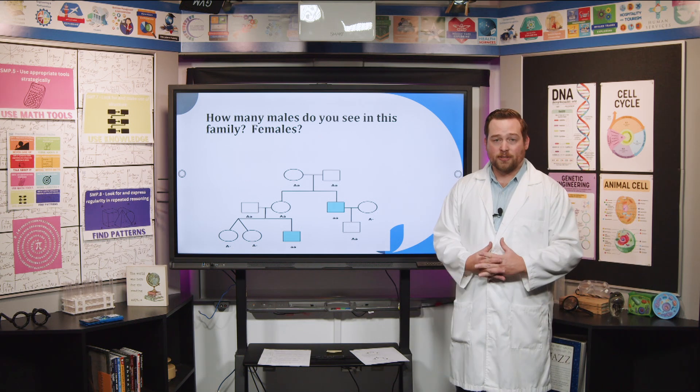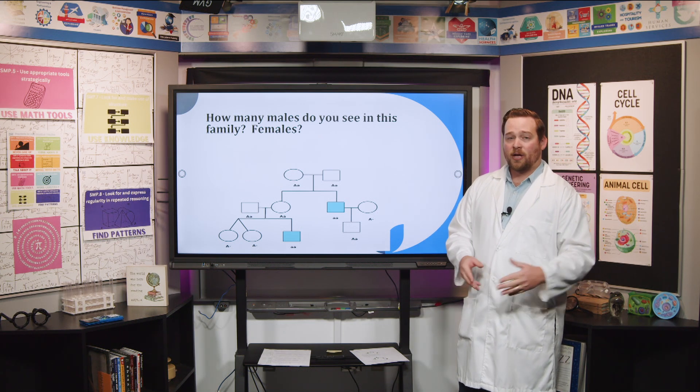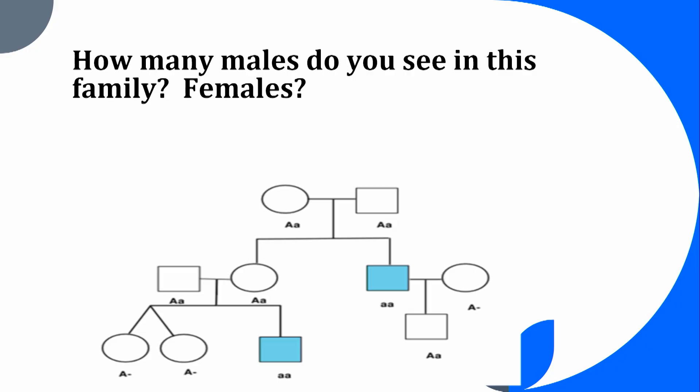Here are a couple of questions. How many males are in this family? Males are squares, so just count the squares: one, two, three, four, five — there are five males. Next, how many females? Females are circles, so count the circles: one, two, three, four, five — there are five females. We know that just by looking at the shapes.